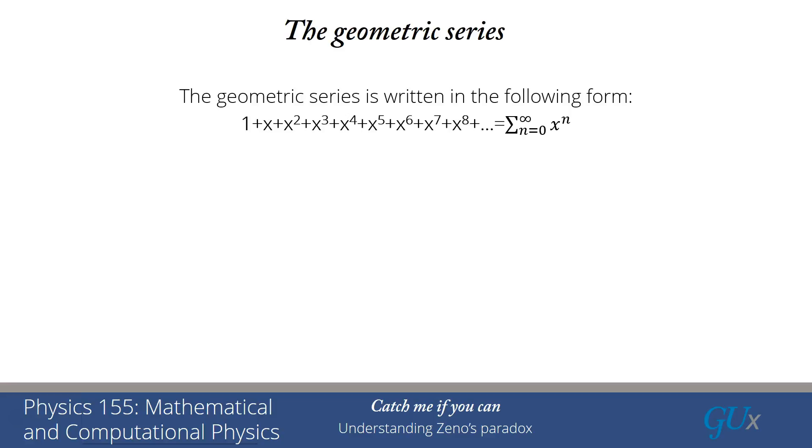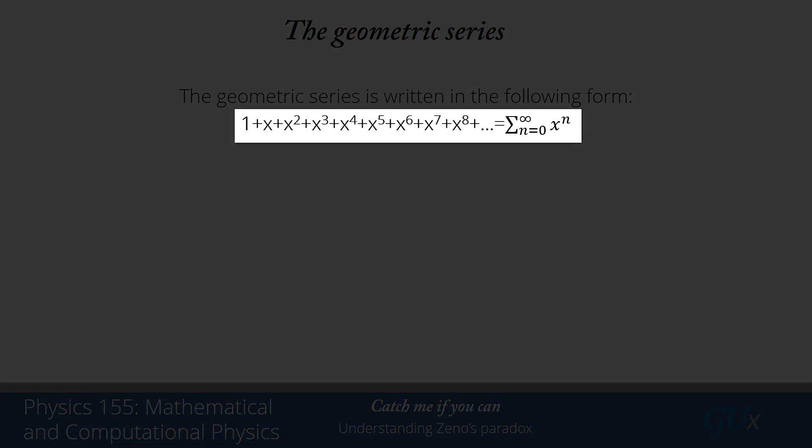So let's take a look at what the geometric series is. It's one plus x plus x squared plus x cubed plus x to the fourth plus x to the fifth plus x to the sixth plus x to the seventh plus x to the eighth and so on all the way out to infinity. And we write it in this graphical form, the sum n equals zero to infinity of x to the n.